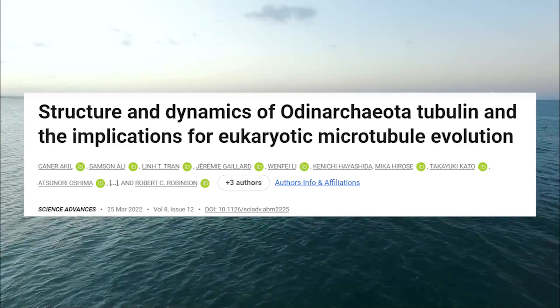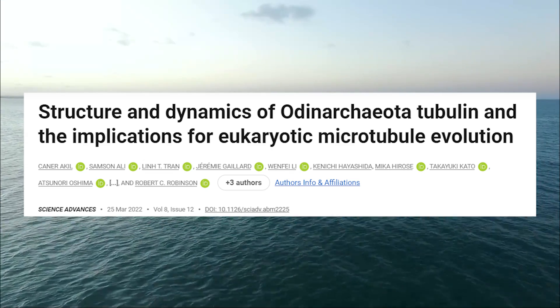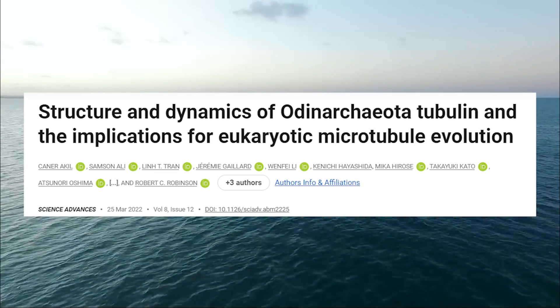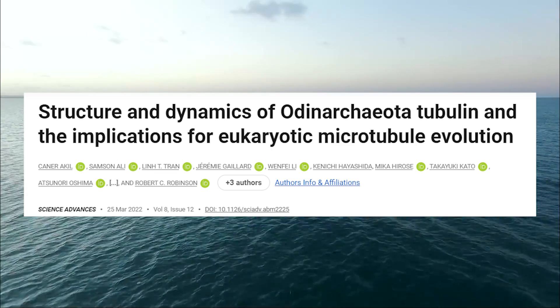In a new paper titled 'Structure and Dynamics of Odonarchaeota Tubulin and the Implications for Eukaryotic Microtubule Evolution,' Kaner and colleagues find a crucial missing link in the evolution of eukaryotes from a prokaryotic ancestor. Tubules are intracellular structures that help organize the guts of a cell. Prokaryotic tubules are starkly different from eukaryotic tubules, and if you try to genetically alter the eukaryotic tubules into the prokaryotic tubules, you get catastrophic disassembly, which is bad. So how do you get the evolution of the eukaryotic condition from the prokaryotic condition? This is what they sought to figure out.